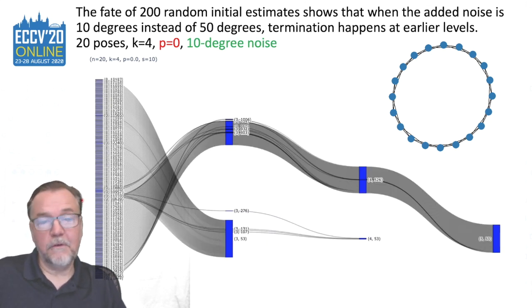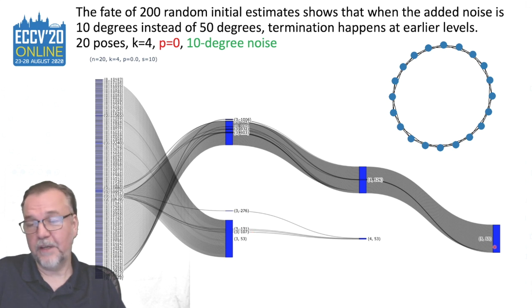If we reduce the noise from 50 degrees to 10 degrees, the scale on the axis here has changed. You can see that most terminate at level three or level five, so that's very encouraging.